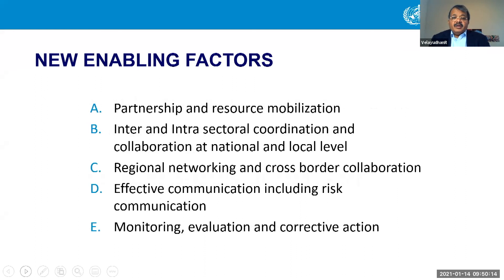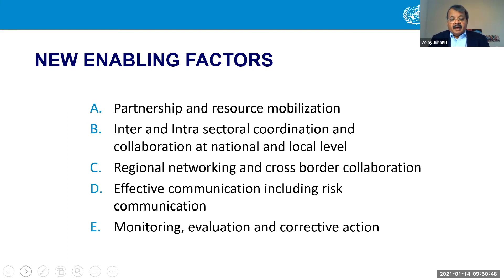Enabling factors include resource mobilization, good partnerships, inter- and intersectoral coordination at national and local levels. There needs to be a regional network and cross-border collaboration — Singapore has led the way with a cross-border collaboration across the ASEAN region where countries share confidential information on virus movement, and this is now being implemented in the Americas. Effective risk communication and strengthened monitoring and evaluation for dengue control are also essential.